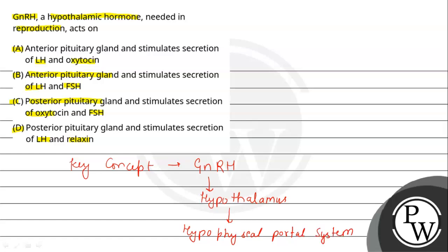After reaching the anterior pituitary, it will act on the anterior pituitary. So, GnRH goes to the anterior pituitary and in response to GnRH, the anterior pituitary will release FSH and LH.